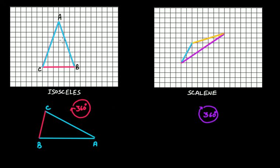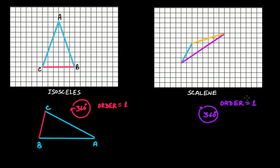So what is the order of rotational symmetry for an isosceles triangle? The order is one, because we get rotational symmetry only at 360 degrees. The same is true for a scalene triangle — the order of rotational symmetry is also one. So in the case of an equilateral triangle it is 3, but in the case of an isosceles triangle it is 1, and in the case of a scalene triangle it is again 1.